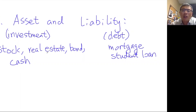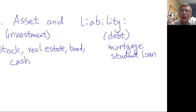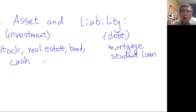For example, a bond pays you interest. Stock pays dividends. Real estate either saves you from paying rent or you can rent it out and collect rent — either way, it gives you money. A liability is the opposite — you have to give money to it. With a mortgage, you got a loan and you pay monthly to keep it. The same with a student loan. When you first buy a house with a loan, it's a liability; after you pay it off completely, it becomes your asset.